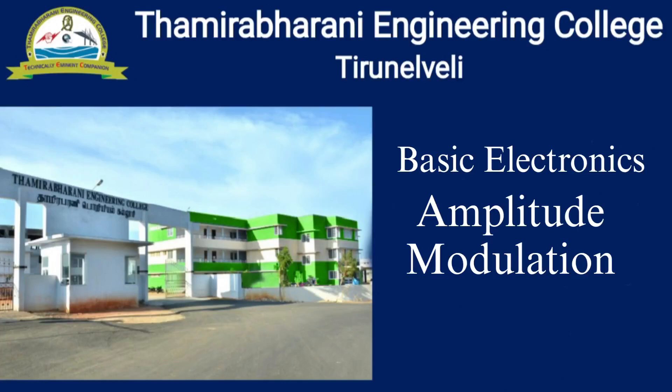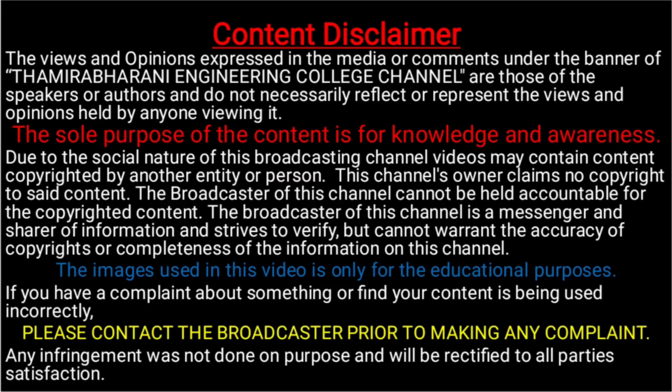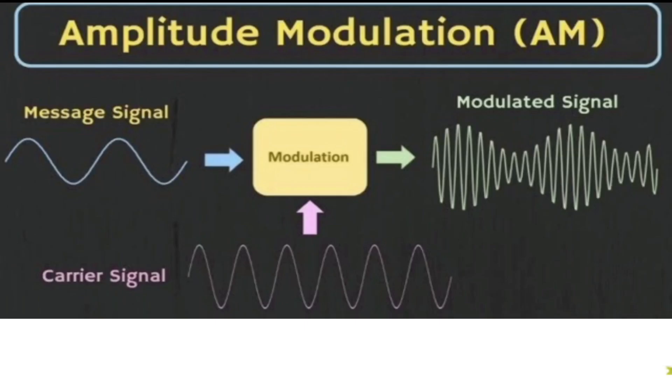Hi students, now we are discussing Amplitude Modulation. It is a process by which a wave signal is transmitted by modulating the amplitude of the signal.